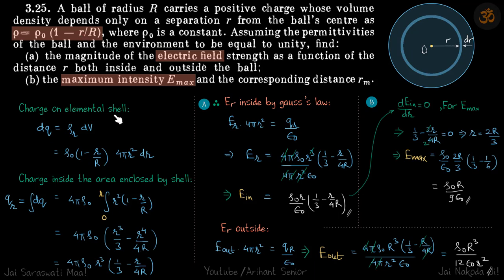The charge on that elemental shell is rho r into dv. Rho r is rho naught 1 minus r by R and dv is 4 pi r squared dr.